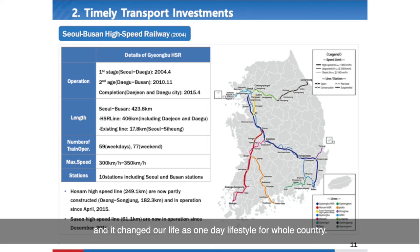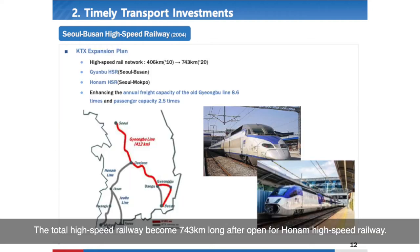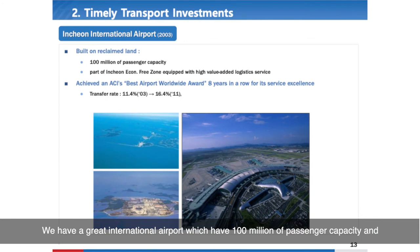The KTX changed life in Korea with a one-day lifestyle connecting the whole country. There are two different operational companies for the high-speed railway system: Korail and SRT. The total high-speed railway network became 743 km long after the opening of the Honam High Speed Railway.